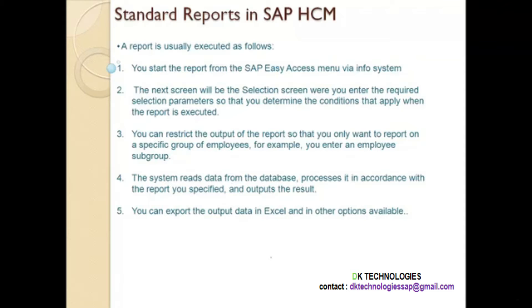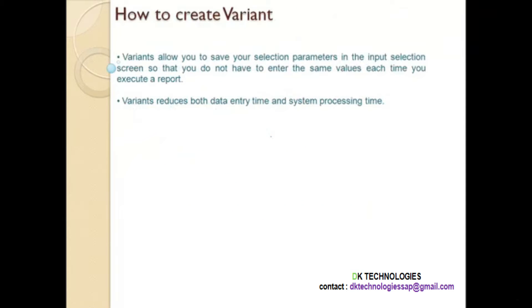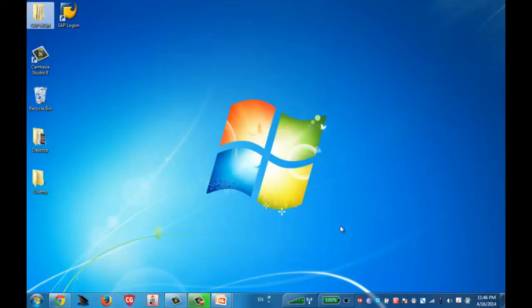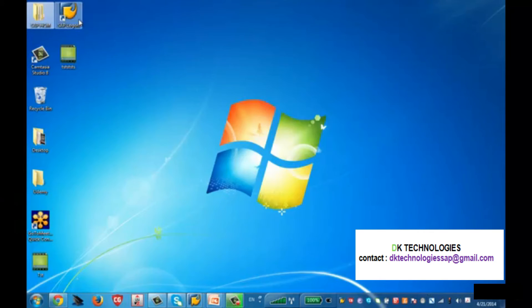Now let's look at what a variant is. Variants allow you to save your selection parameters in the input selection screen so that you do not have to enter the same values each time you execute a report. Every time you execute the same report with the same values, instead of re-entering them, you can create a variant, save it with a name, and next time simply pick up that saved variant.